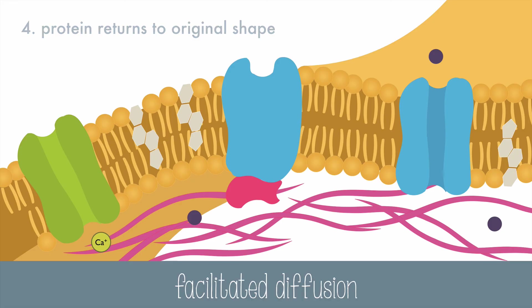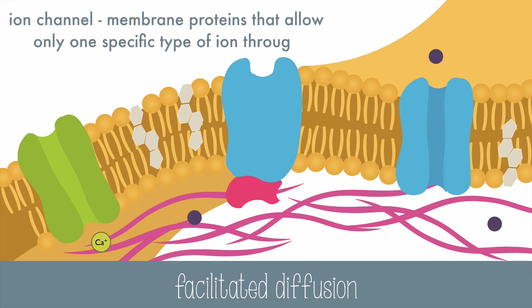There are also ion channels, which are membrane proteins that only allow one specific type of ion through. This one is a calcium ion channel and will only let calcium ions through. Other ions will have their own type of channel.